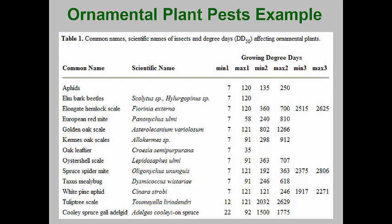Here's a list of degree day targets for a variety of ornamental plant pests. This one was developed at Cornell after monitoring many different pests over several years. The minimum and maximum degree days are rough estimates of when egg hatch or other activity first begins and ends. Notice that many of the pests have two to three generations.